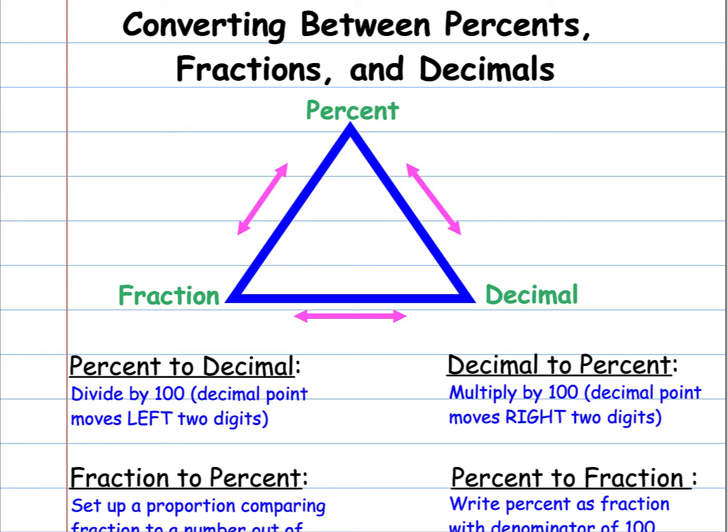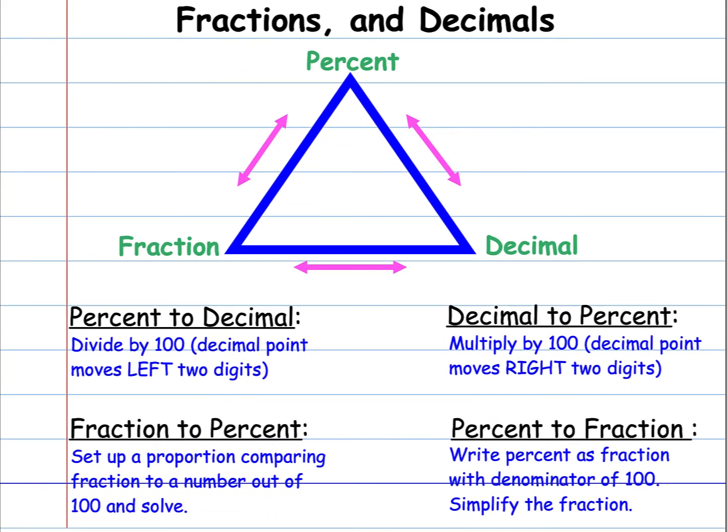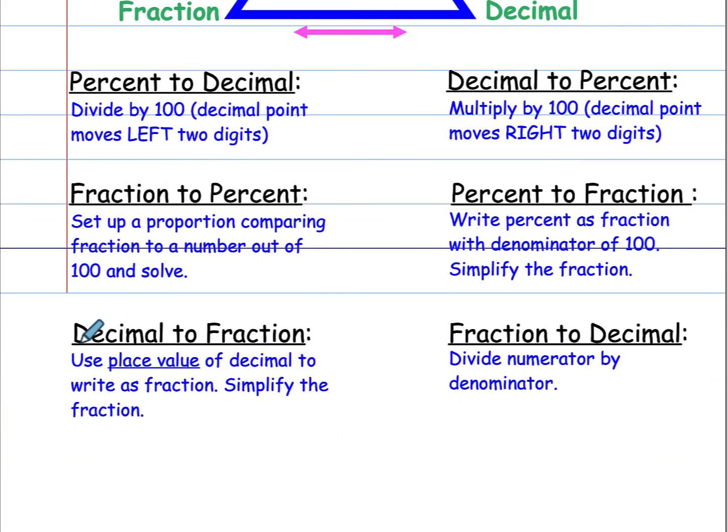So if I'm going from a decimal to a fraction, I would use place value of the decimal to write as the fraction. So remember, the last digit tells me the place value or the denominator I need. And then I simplify the fraction after I get it over 10, 100, 1000, etc. If I'm going from a fraction to a decimal, I simply divide the numerator by the denominator.